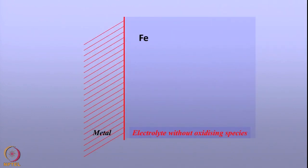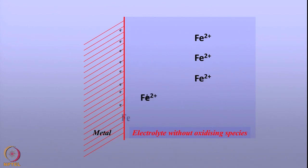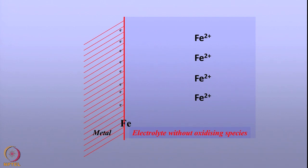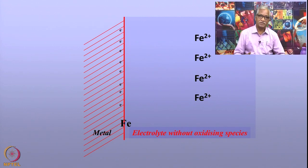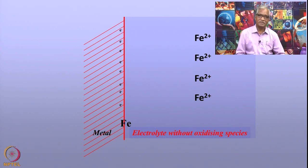You can either increase the rate of reaction or reduce the rate of reaction by applying the potential in the appropriate manner. Now, when we come back to corrosion — how do you control corrosion? I am going to replay the slide from the previous lecture. You see here that I have immersed the metal in electrolyte where the oxidizing species are not available. If there are no species in the electrolyte to take away the electrons, then the oxidation of the metal does not continue. As long as there is no oxidizing species in the environment, corrosion will not occur — or if the metal surface is negatively charged using electrons, corrosion will not occur.